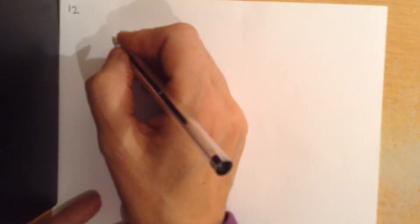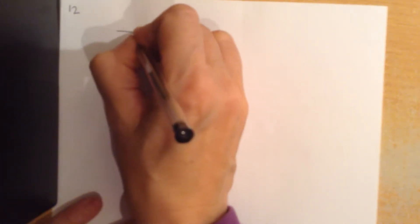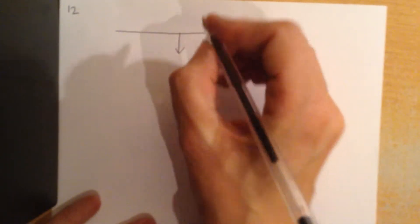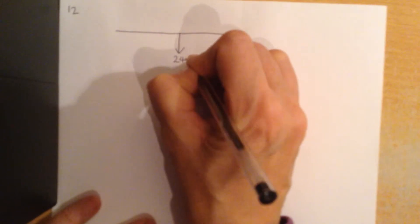Question 12. This is a great one, it's all about curtains. Now we've got a curtain pole, and apparently this curtain pole, uniform curtain pole, has a weight, so let's put that in, of 24 newtons.